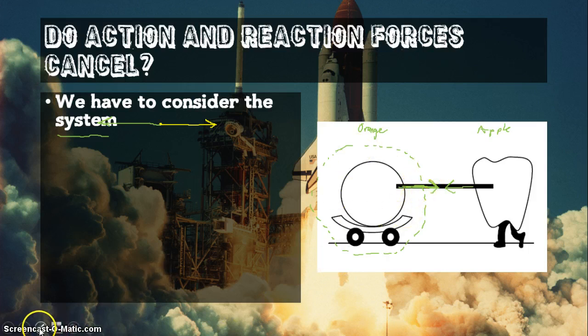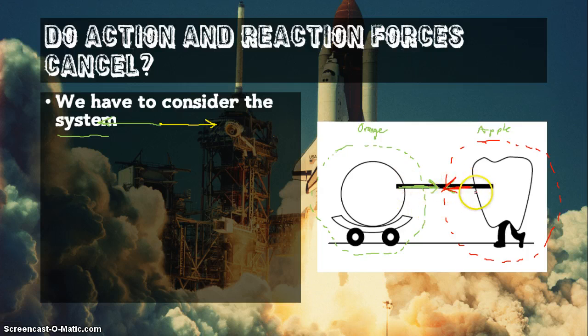Now on the other hand, if I call the apple my system, now that orange pull on the apple is what's holding the apple back. But the force that the apple is putting on the orange doesn't matter necessarily to the apple. It's only affecting the orange. So the key here to see is that the forces are acting on different objects. If they're acting on different objects, they can't cancel each other out.